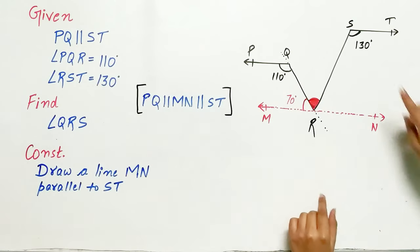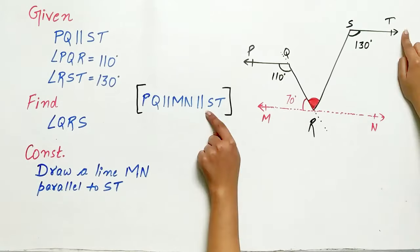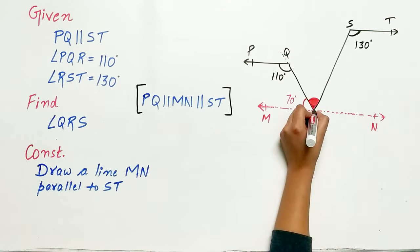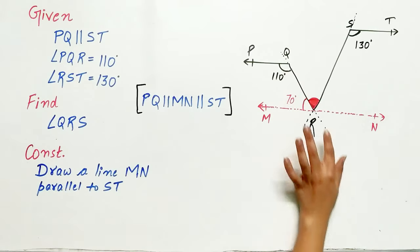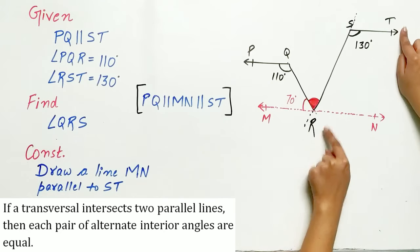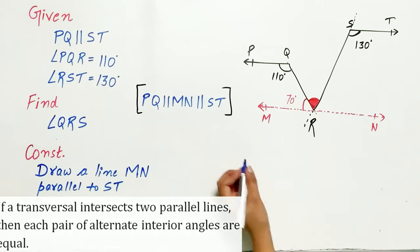Now look carefully, ST is parallel to MN. RS is a transversal, that is it intersects MN and ST. Then angle RST equals angle MRS. Why? Because of alternate interior angles.